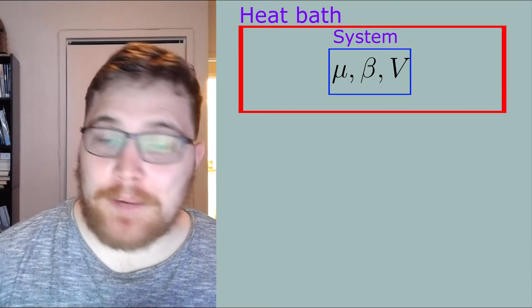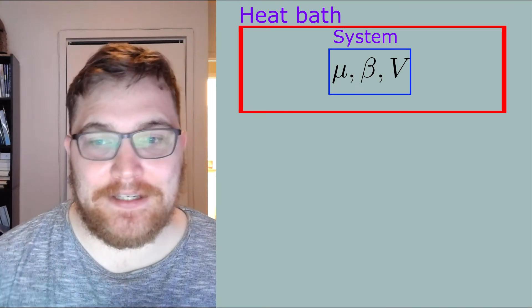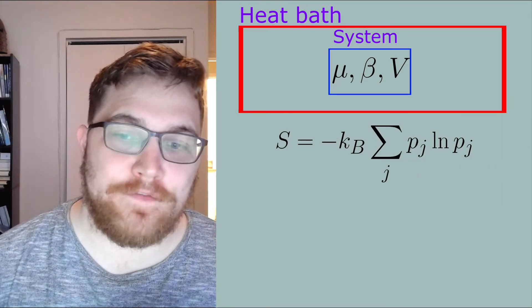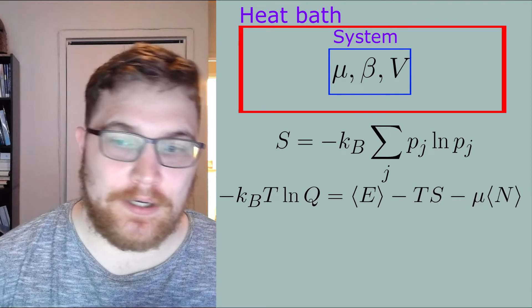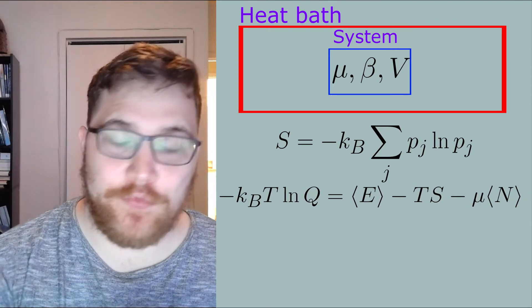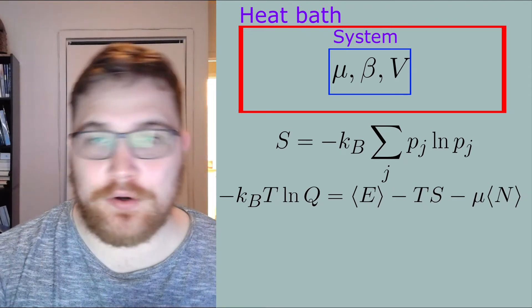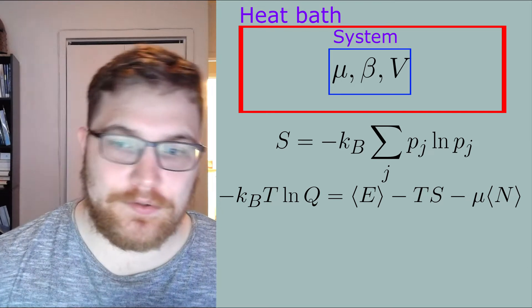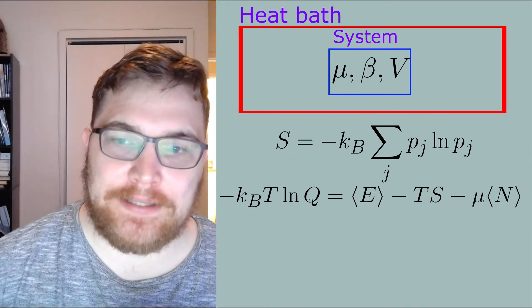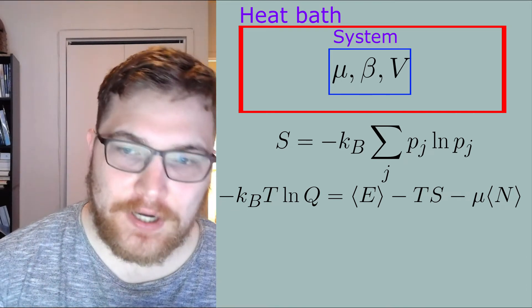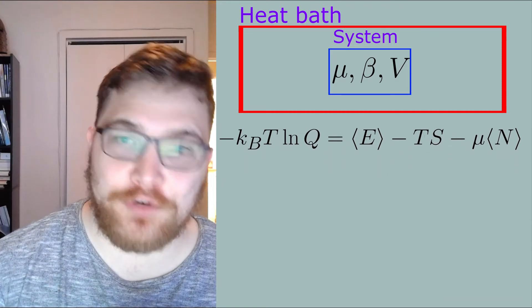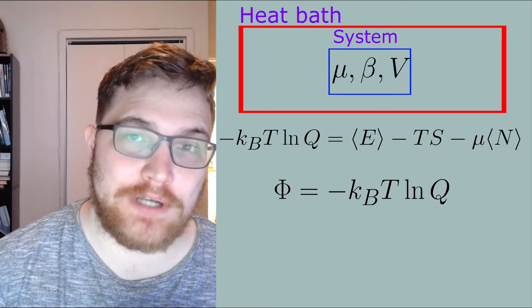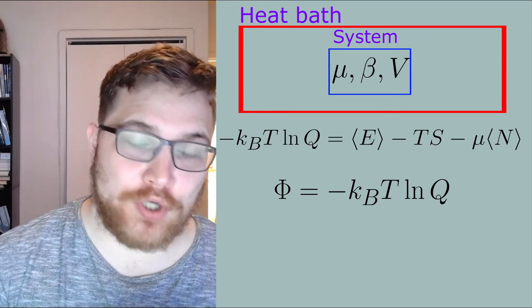So again, taking this probability distribution and typing it into the Gibbs entropy, we find another relationship between the grand partition function and our thermodynamic variables. We find that this expression allows us to identify the grand potential from thermodynamics in terms of the grand partition function.